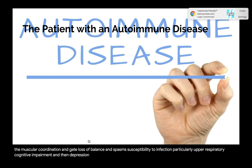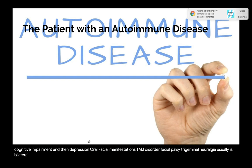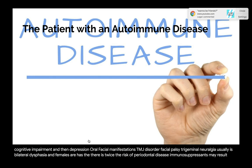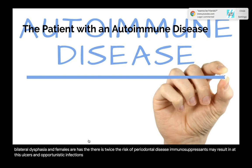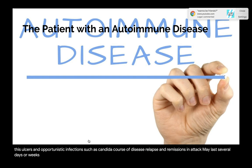Other symptoms include changes in muscular coordination and gait, loss of balance and spasms, susceptibility to infection particularly upper respiratory, and cognitive impairment and depression. Oral-facial manifestations include TMJ disorder, facial palsy, trigeminal neuralgia (usually bilateral), and dysphagia. In females there is twice the risk of periodontal disease. Immunosuppressants may result in aphthous ulcers and opportunistic infections such as candida.